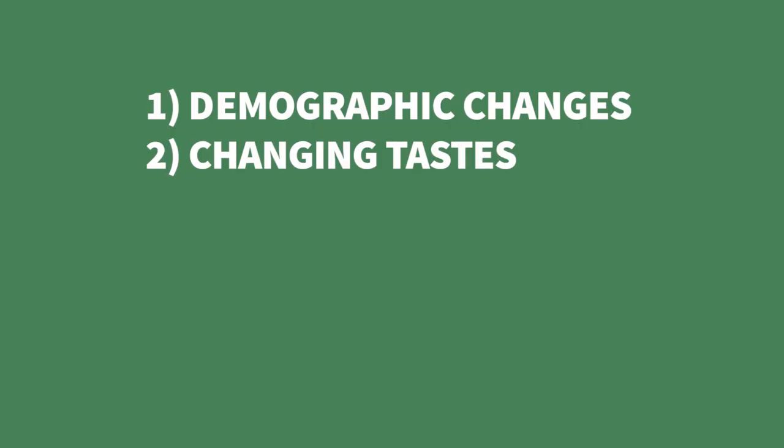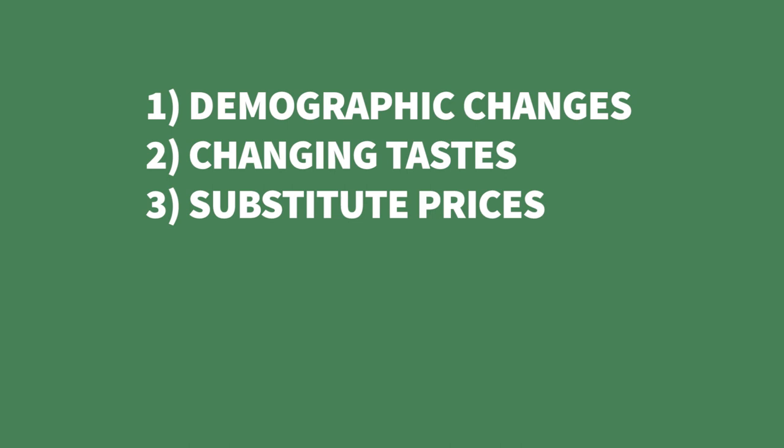Next factor is tastes. What has happened in the United States to the demand for cigarettes over the last four or five decades? It's decreased, because people just aren't interested in smoking so much, mostly for health reasons — different tastes affect demand. The next category is substitute prices. Think about Pepsi-Cola and Coca-Cola — if Pepsi gets more expensive, what will happen to the demand for Coca-Cola? It will increase, because people will turn away from Pepsi. Coke and Pepsi are substitutes, so if the price of one substitute gets higher, people go to the other and increase demand for it.